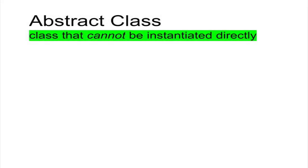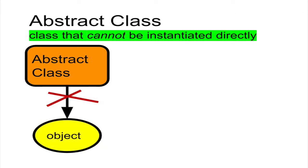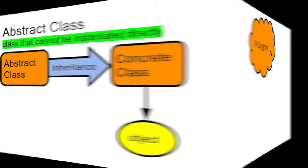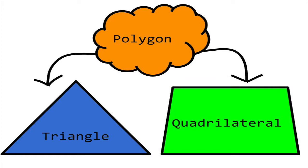An abstract class is a class that cannot be instantiated as itself. Instead, it serves as a base class from which more concrete classes inherit their attributes and behaviors. In our example, polygon is an abstract class. Therefore, we cannot create polygon objects. What we can do is create objects of its derived classes, triangle and quadrilateral.